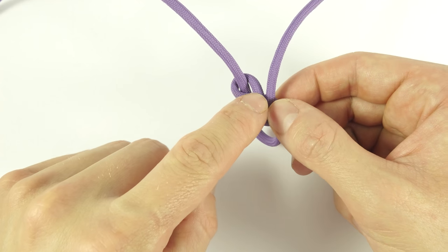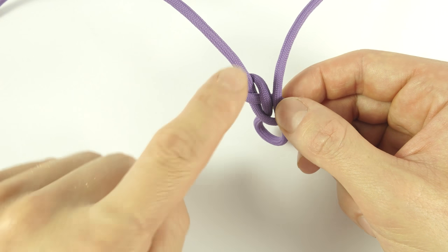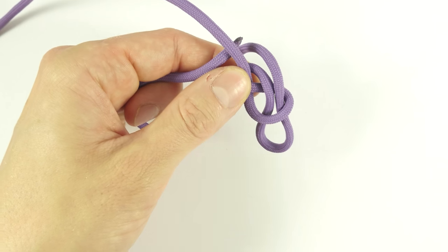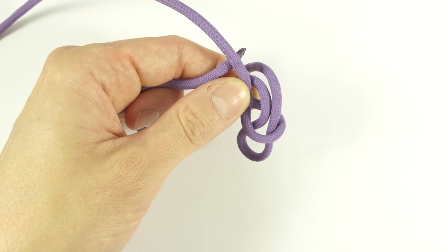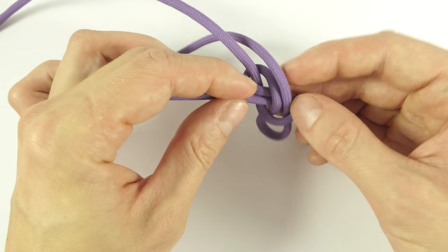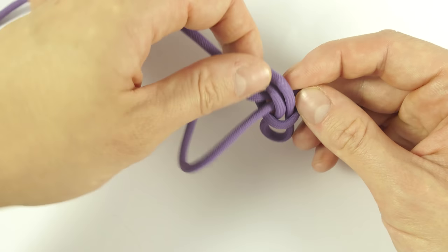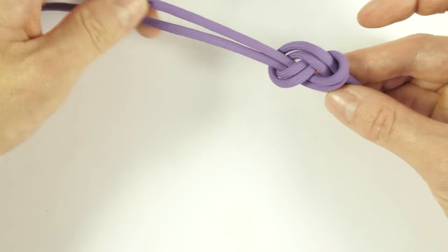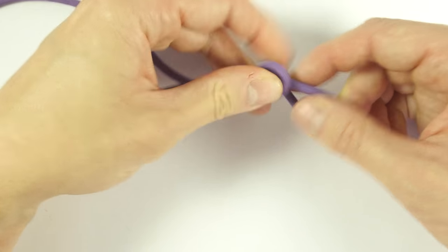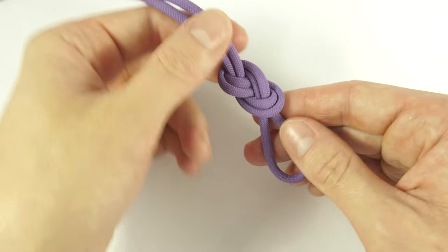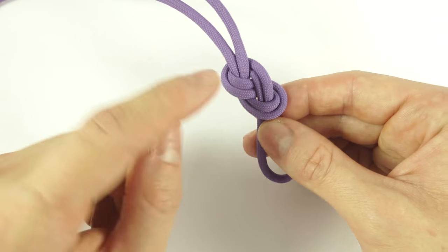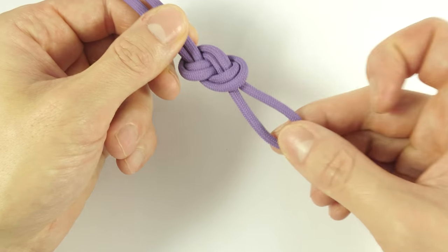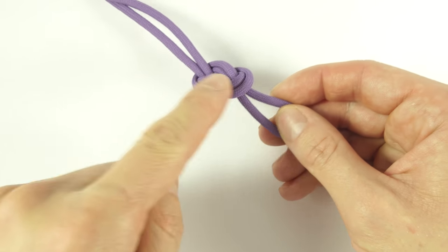Then we follow the other strand through the figure 8 knot all the way to the standing end. Like this, and with this we have created a figure 8 knot with a loop at the bottom. This is handy since we can now attach the end of our rope onto various objects.